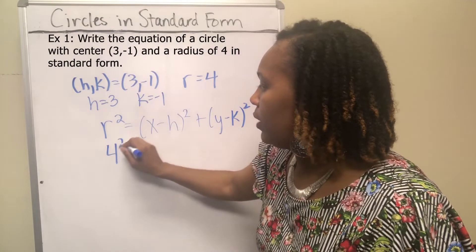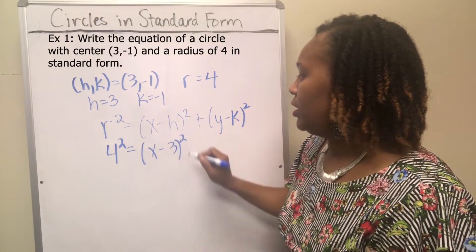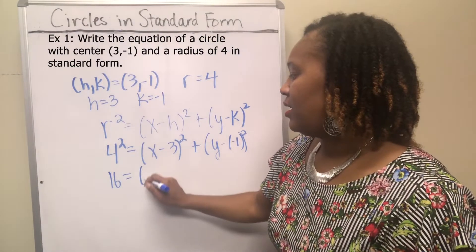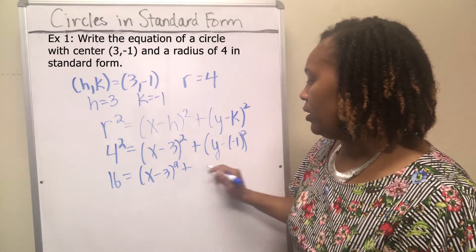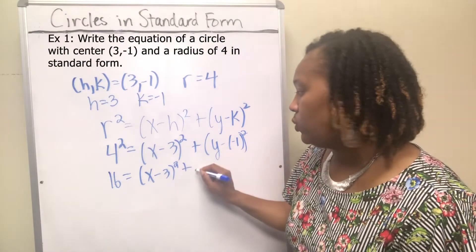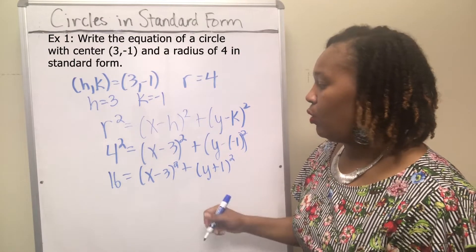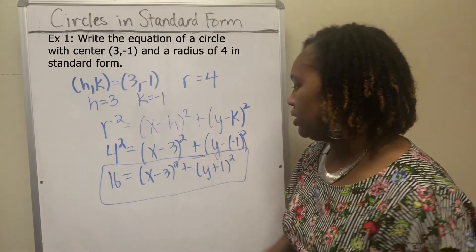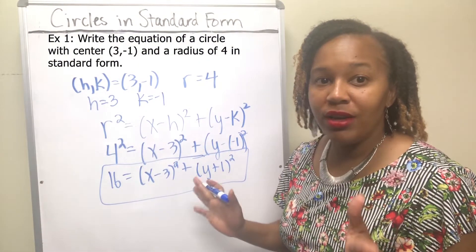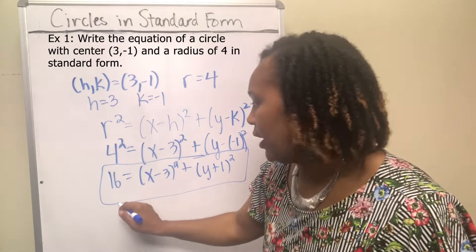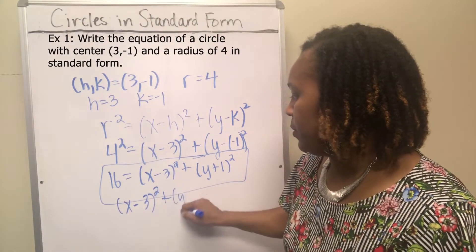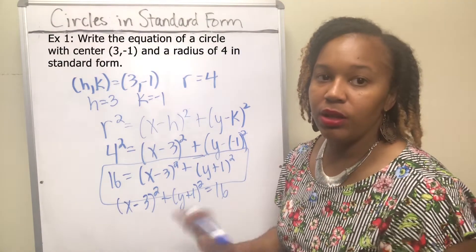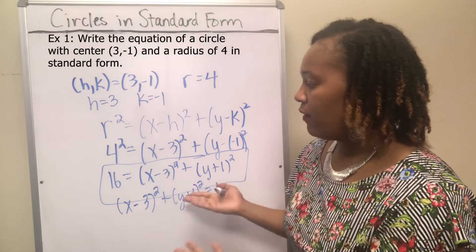R is 4, so replace R with 4. H is 3, replace H with 3. K is negative 1. 4 squared is 16. That gives us 16 equals (X minus 3) squared plus (Y minus negative 1) squared, which becomes (Y plus 1) squared. So the equation of the circle is 16 equals (X minus 3) squared plus (Y plus 1) squared. Don't be confused if the radius term is written on the other side of the equal sign — it's the same equation.